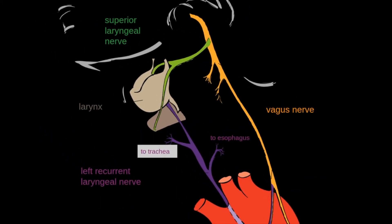The left vagus nerve extends into the mediastinum, recurs via the aortopulmonary window, and then the recurrent laryngeal nerve ascends to the larynx in the tracheoesophageal groove.